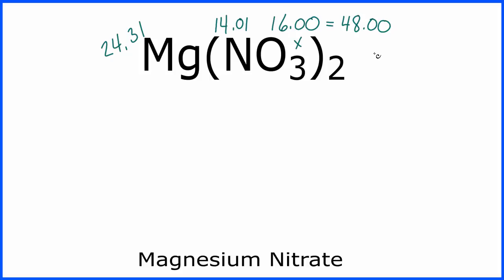So now we have the masses of each element. Now we'll add them up. So we have 24.31, and here I'll put the parentheses around, since everything in here we need to add up together first before we multiply by the two.